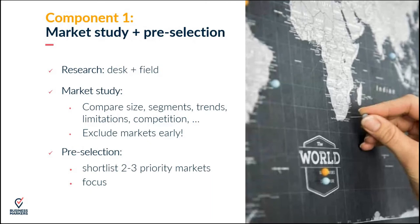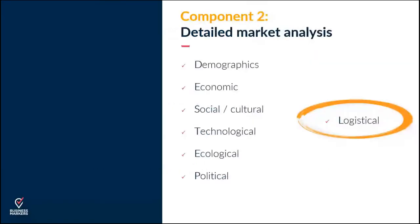It's very important to compare markets by their sizes, segments, trends, limitations, and how strong competition is in each. A second tip is to exclude certain markets very early if you realise they will have a big impact on your current internal organisation and possibly your home markets. Based on the selection, you will have a pre-selection shortlist of about two to three priority markets on which you will focus with the second component: a detailed market analysis.